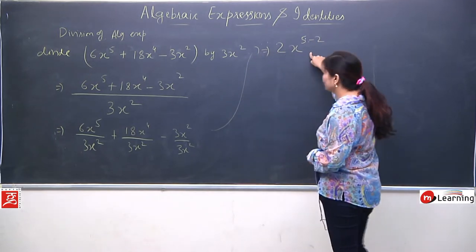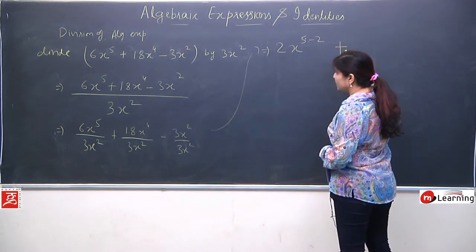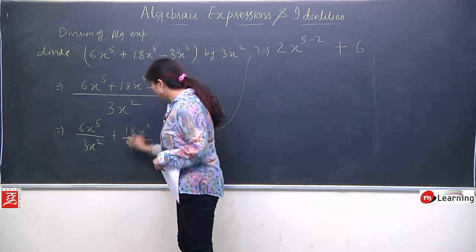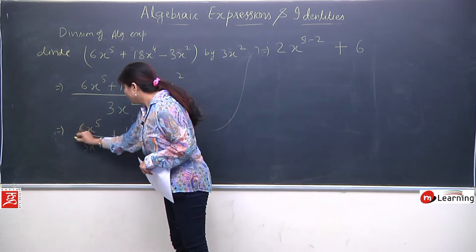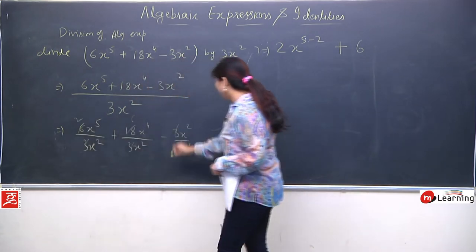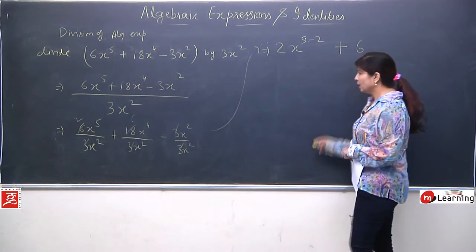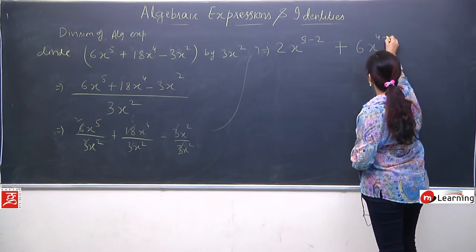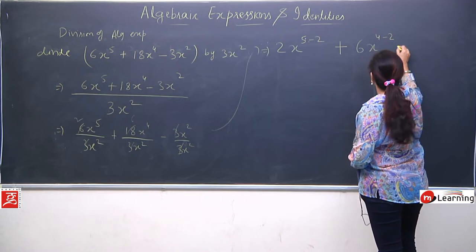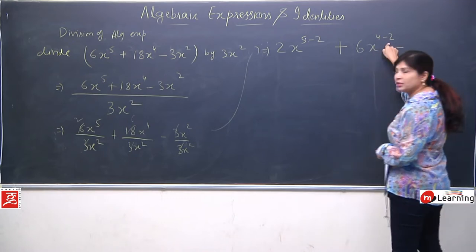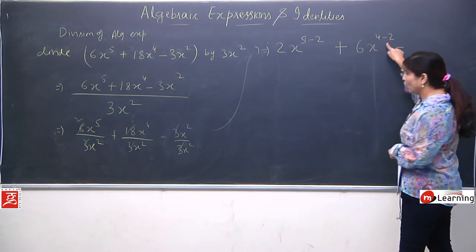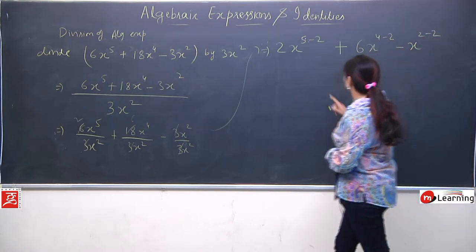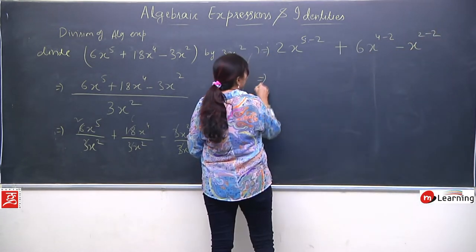Plus. Second term mein: 3 sixes are 18. Yahan cancellation simple kar sakte hain — 3 and 3 will cancel, giving 6. And x to the power 4 minus 2. Similarly third term mein: x to the power 2, minus 2. Division ki property humne apply ki — base same hai, to power subtract ho jayega. Division convert ho gaya.